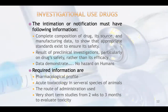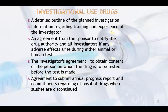The notification must have the following information: complete composition of the drug, its source, and manufacturing data to show that appropriate standards exist to ensure its safety; results of preclinical investigations particularly on drug safety rather than its efficacy; data demonstrating no hazards on humans. Required information includes pharmacological profile, acute toxicology in several species of animals, and the route of administration used — with very short-term studies from two weeks to three months to evaluate toxicity. Also required: a detailed outline of the planned investigation; information regarding training and experience of the investigator; an agreement from the sponsor to notify the drug authority and all investigators if any adverse effects arise during either animal or human tests; the investigator's agreement to obtain consent of the persons on whom the drug is to be tested before the test is made; and an agreement to submit annual progress reports and commitment regarding disposal of the drug when studies are discontinued.